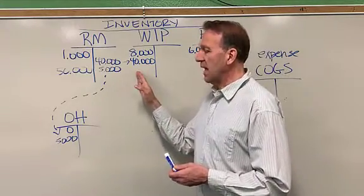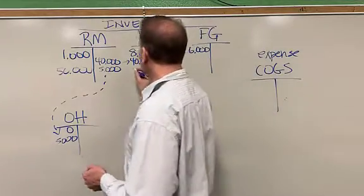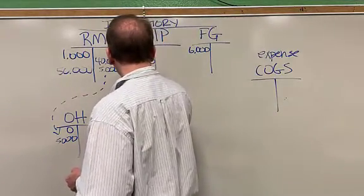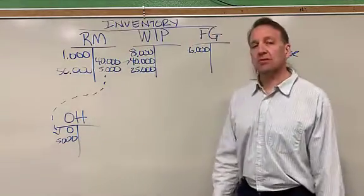So work in process. Now we've got $40,000 of materials. We started with $8,000. We've got $48,000.